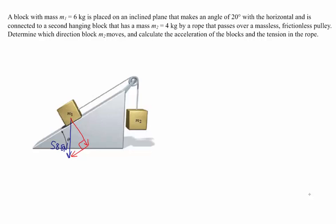The ramp makes an angle of 20 degrees with the horizontal, which means the angle that the weight makes with the perpendicular direction is also 20 degrees. The parallel component of the weight is 58.8 times sine of 20 degrees, which is 20.11 Newtons. The perpendicular component of the weight is 58.8 times cosine of 20 degrees, which is 55.25 Newtons.